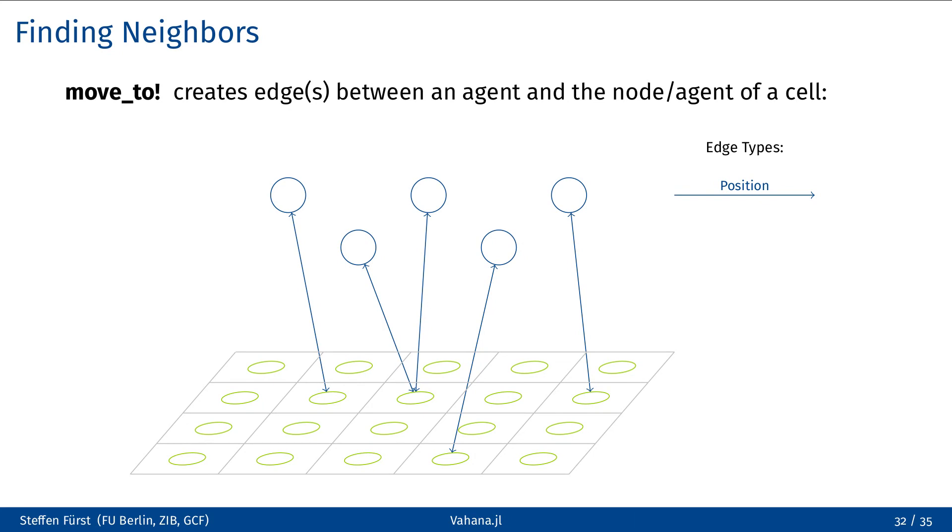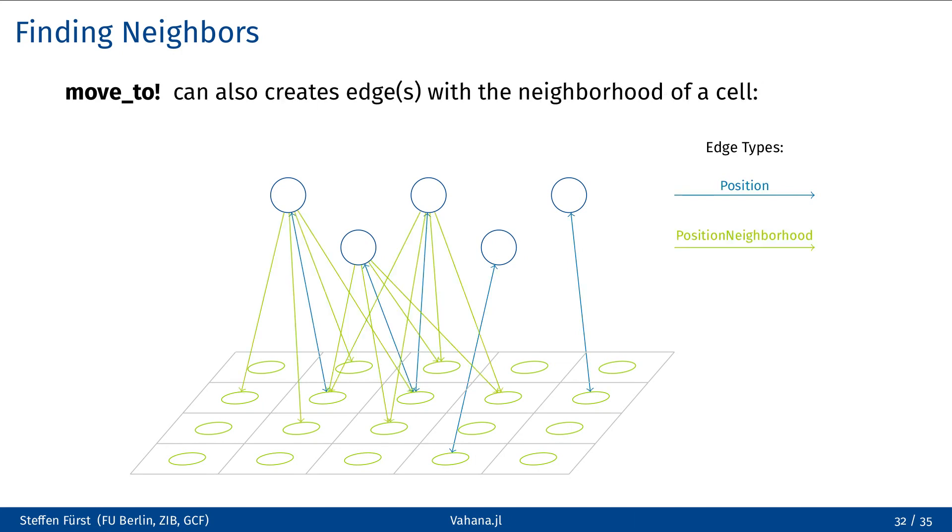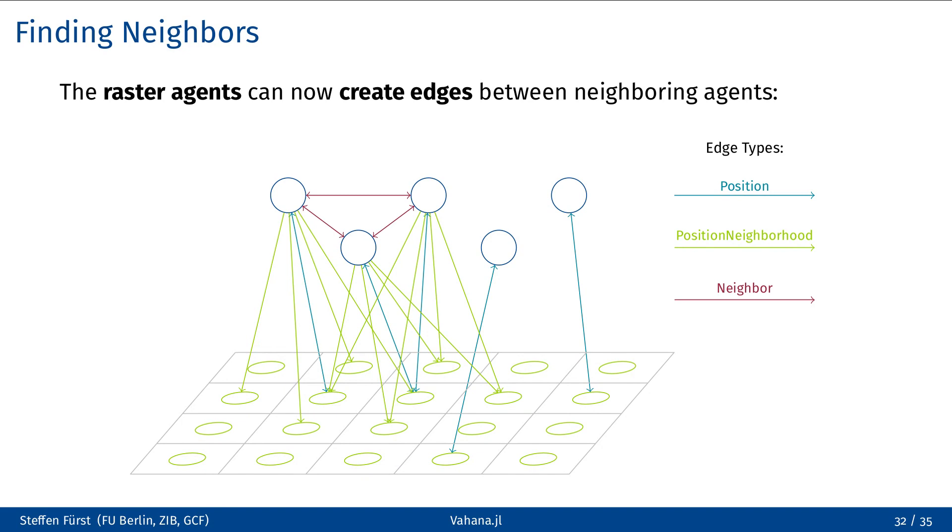The second strategy creates edges between agents of a different type and the cells, which can be achieved using the moveTo function. In its current version, Vahana doesn't include a function that enables finding agents that are connected to cells in the surrounding area of a specific cell. But nevertheless, this functionality can still be realized using the current features of Vahana. Like the connect raster neighbors function, moveTo can also consider the neighborhood of a cell. So we can use the moveTo function again to create edges of type position_neighborhood that lead to the raster neighborhood of the agent's position. In the second step, the cells can now check if there are agents connected with them via edges of type position, and if there are also other agents in the neighborhood via the edges of the type position_neighborhood. If this is the case, they can create edges between them, so that afterwards each agent knows the other agents in the neighborhood of this specific distance and metric. Included in the examples in the Vahana documentation is the Predator Prey model that demonstrates this functionality in detail.